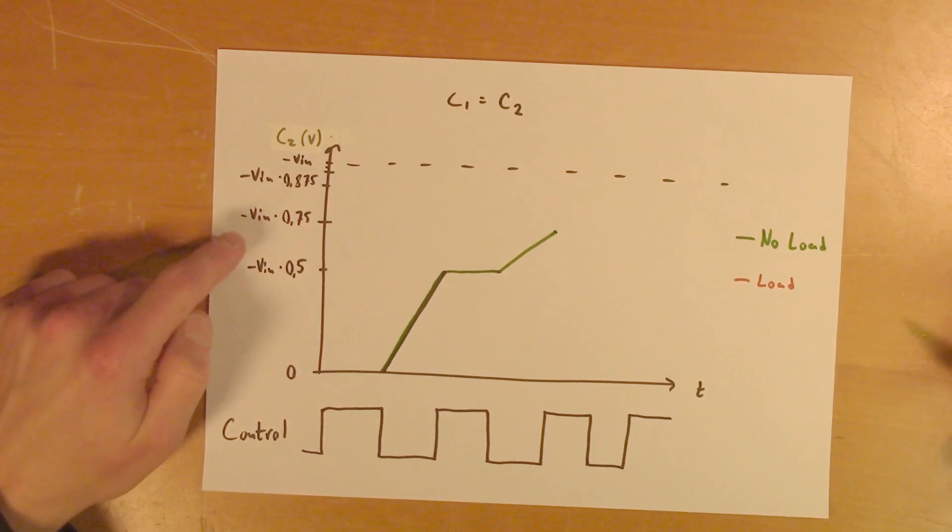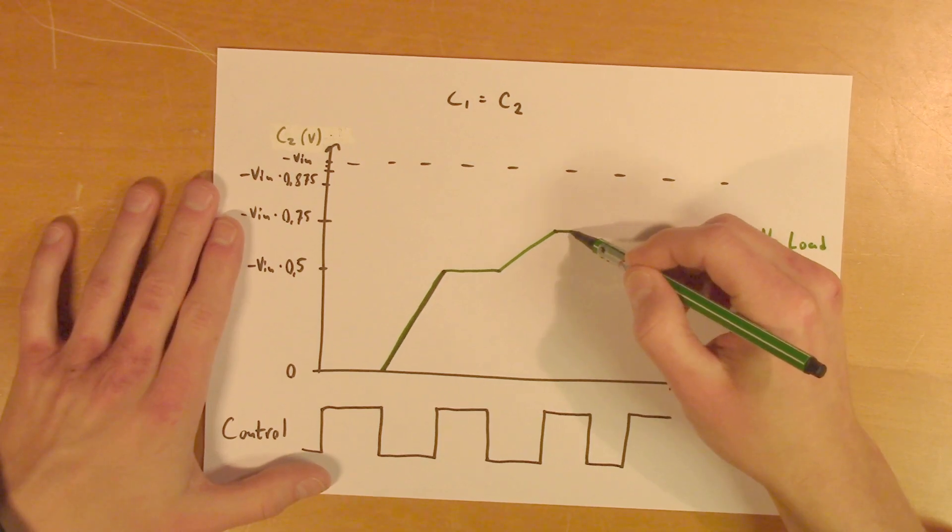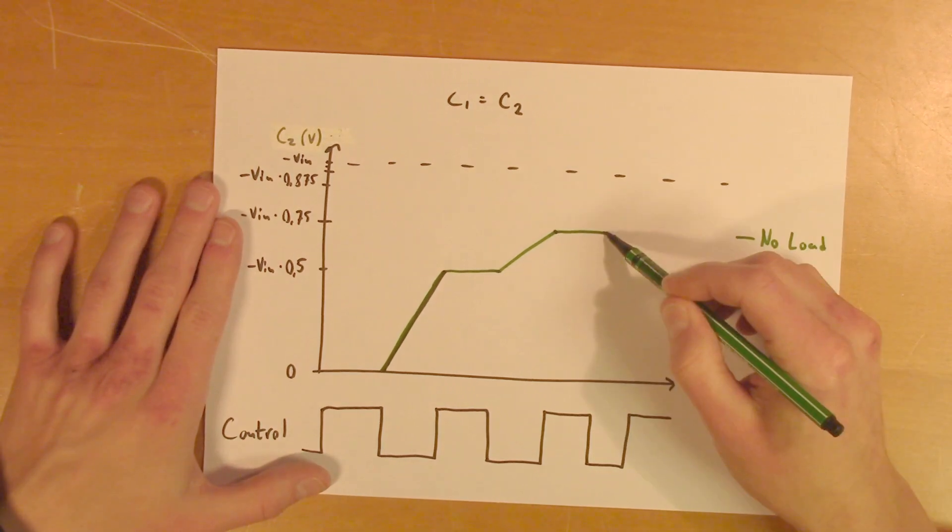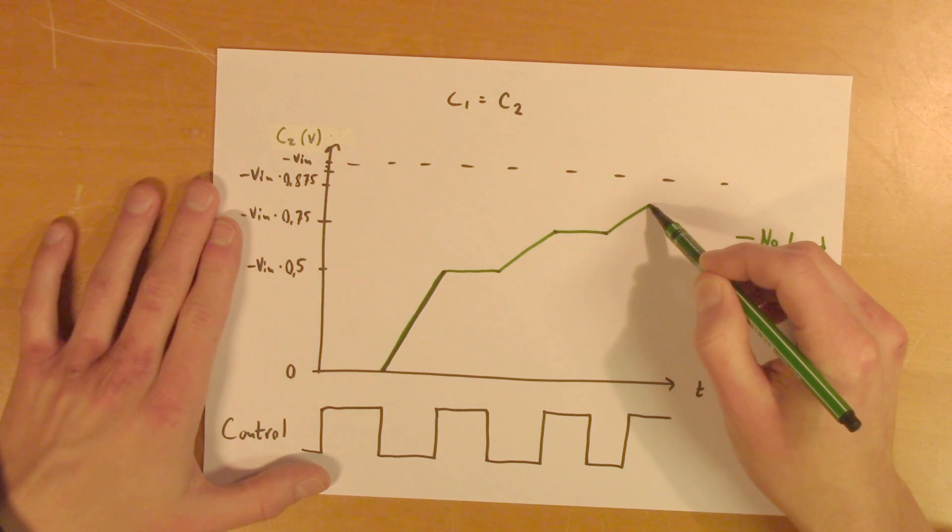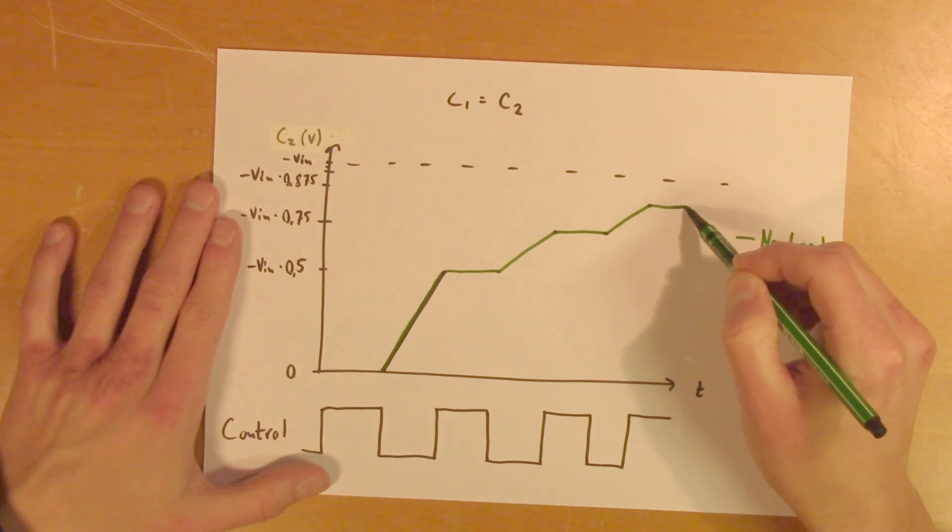It will go to minus Vin times 0.75 volts. And then on the charging cycle, nothing happens. It will charge a little more. And it will continue like this.